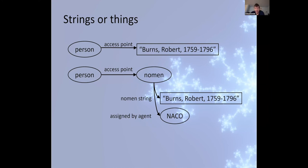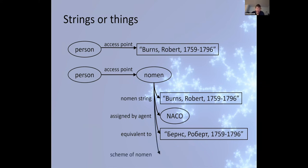We can say who assigned this gnomon string. In this instance, it's NACO, the name authority cooperative. We can say if this gnomon string is the equivalent to any other gnomon string. And here we have Robert Burns reproduced in Cyrillic. We can say where did the gnomon come from? Does it belong to a particular scheme? In this instance, this has come from the virtual international authority file. So the more complex model, the thing model of labels or gnomon strings, enables authority control in a fairly sophisticated and specific manner.